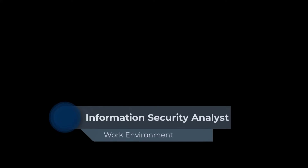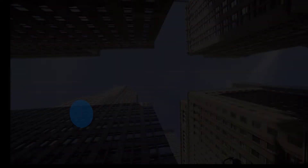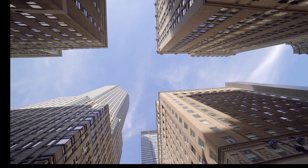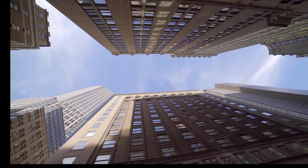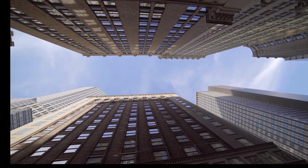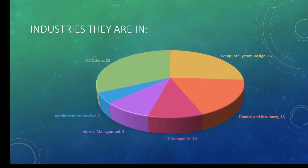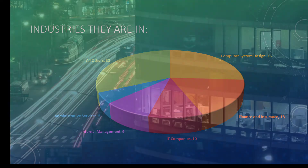The work environment. Information security analysts held about 141,200 jobs in 2020. The largest employers were: Computer Systems Design and Related Services, 26%; Finance and Insurance, 18%; Information, 10%; Management of Companies and Enterprises, 9%; and Administrative and Support Services, 5%. Many information security analysts work with other members of an information technology department, such as network administrators or computer systems analysts.